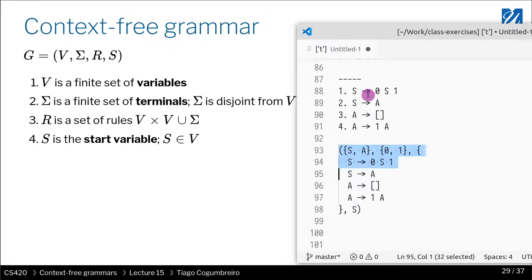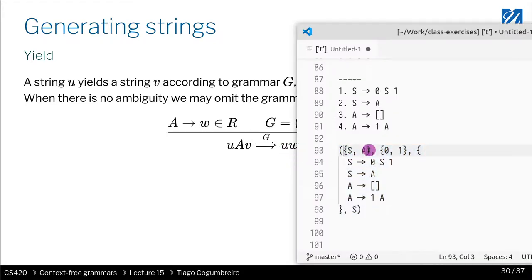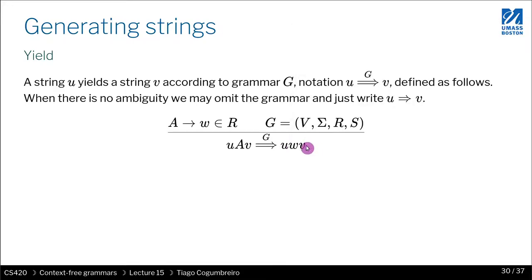So how do we formalize yielding? Yielding, we use the arrow as before. You're going to have on the right-hand side u, w, and v. And u, w, v are strings, strings that may contain either S, A, or 0, 1, as we know.